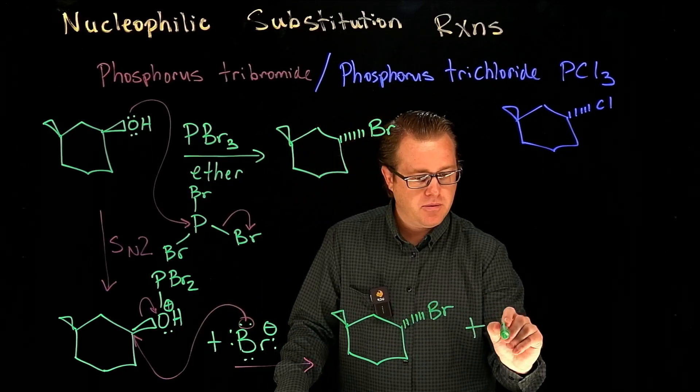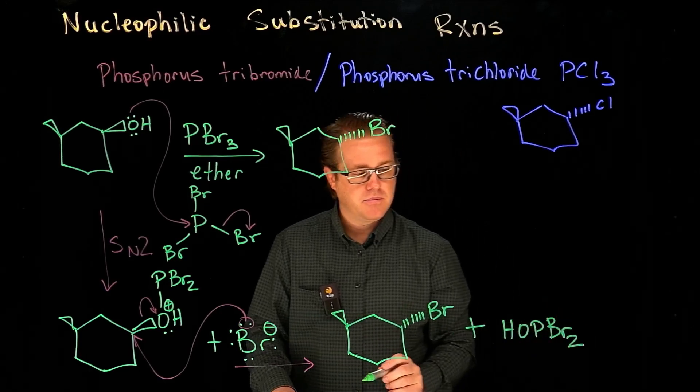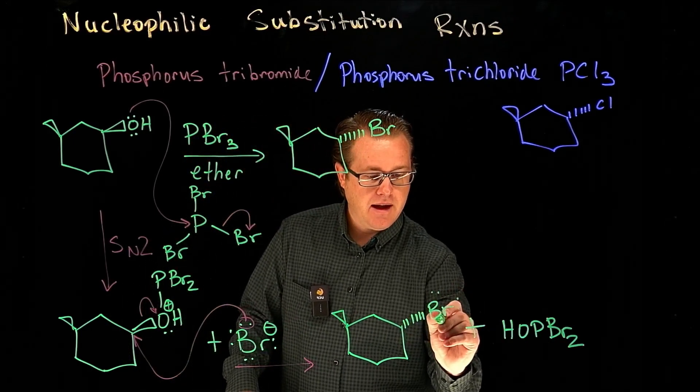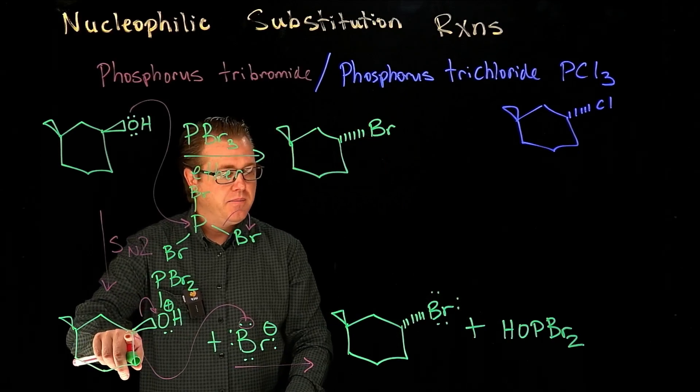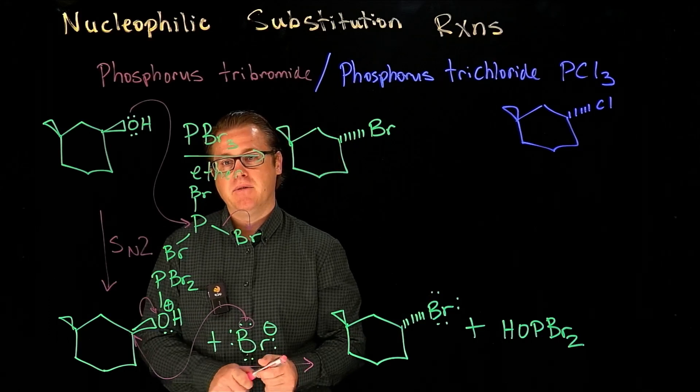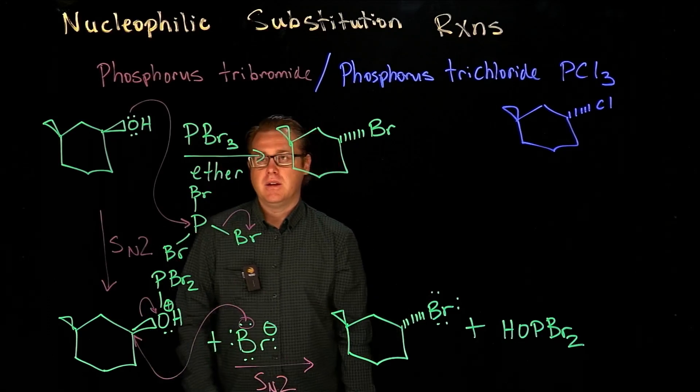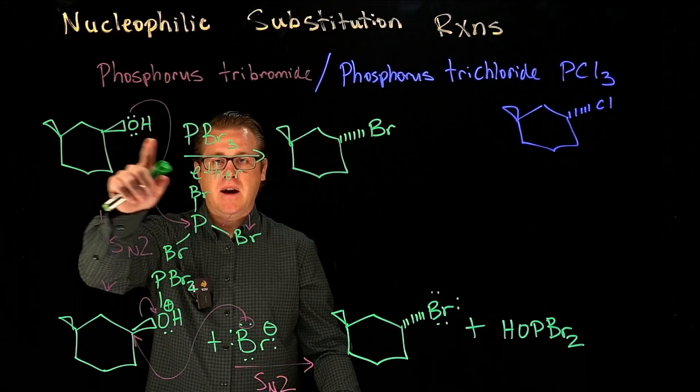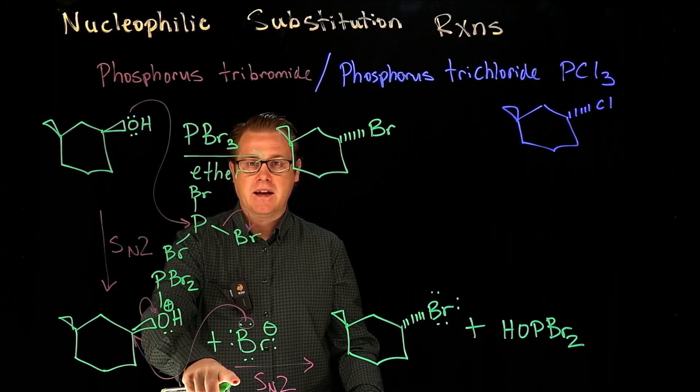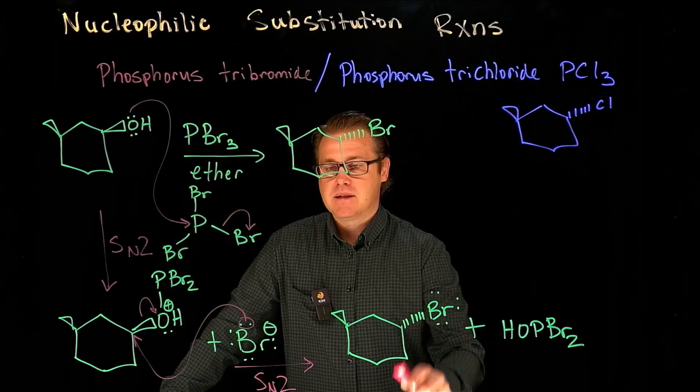And what's our leaving group? HOPBr₂. Now pay close attention. Do you see how we inverted the stereocenter? Why did it get inverted? Because we invoked another SN2. So when we treat an alcohol with phosphorus tribromide or phosphorus trichloride, we do two SN2 reactions in a row, and that inverts the stereocenter.